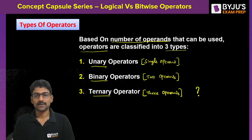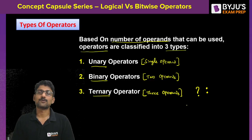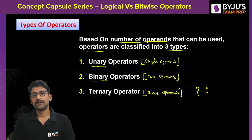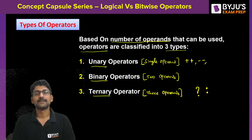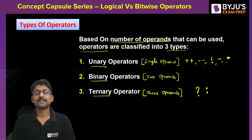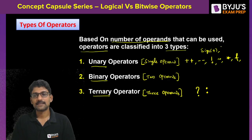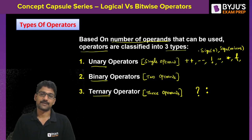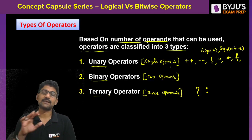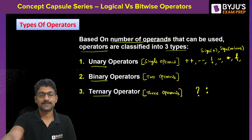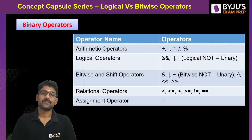We have only one ternary operator: the question-mark colon (?:), also called the conditional operator. We have several unary operators such as increment, decrement, logical NOT, bitwise NOT, pointer (*), address-of (&), unary plus, unary minus, and sizeof.